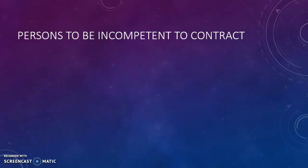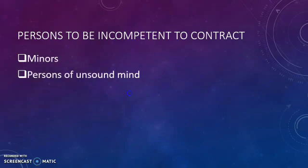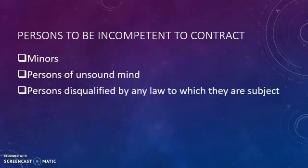There are three categories of persons who are incompetent to contract: minors, persons of unsound mind, and persons disqualified by any law to which they are subject. Let us understand the first one in detail — minors.